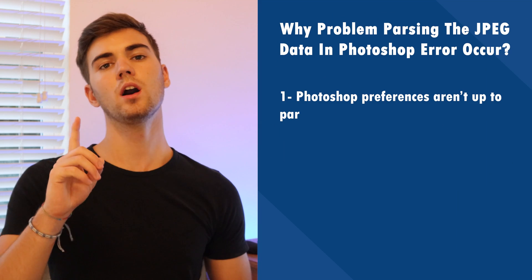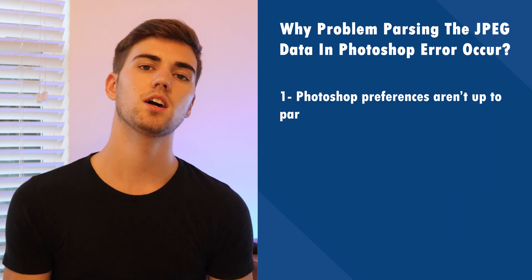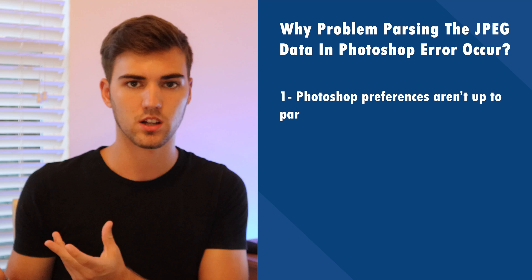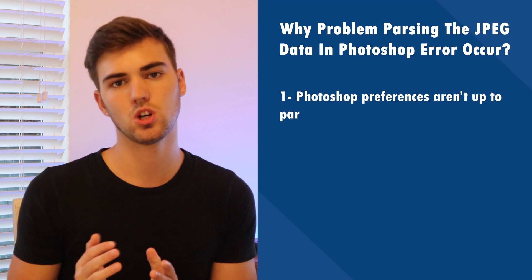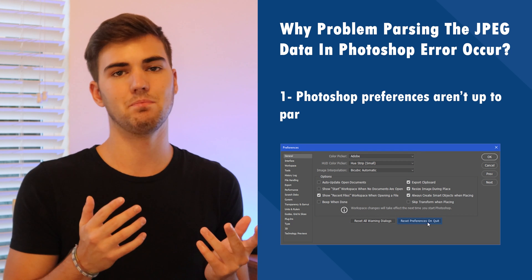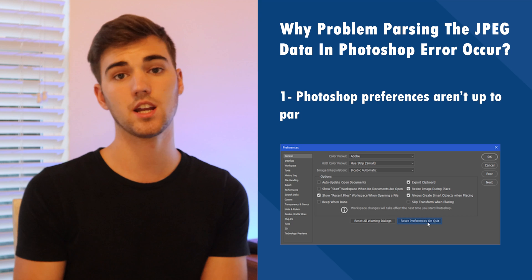When the extension of a photograph is changed to a different sort of extension, an error message occurs in Photoshop. People frequently complain that the file format cannot interpret the file when using the Photoshop tool to edit images. Reason number one: Photoshop preferences are not up to par. There are times that the Photoshop preferences you adjusted are not aligned or up to the mark. This can lead to every image showing the same error. Sometimes all you can do is reset the preferences, as it's the best thing you can do while troubleshooting changes in Photoshop.